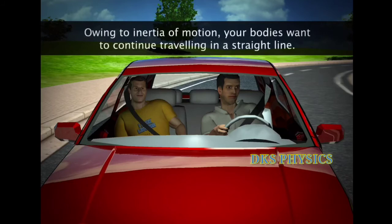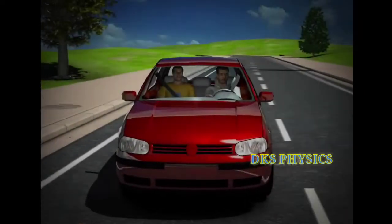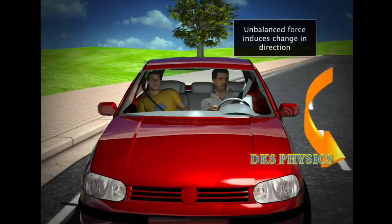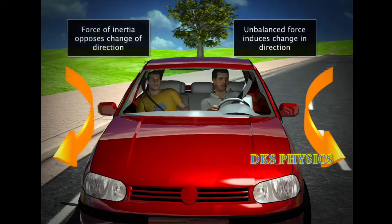Because owing to inertia of motion, your bodies want to continue travelling in a straight line. The engine is applying an unbalanced force to change direction. Our inertia makes us slip to the side of the seat opposite the direction of the turn.